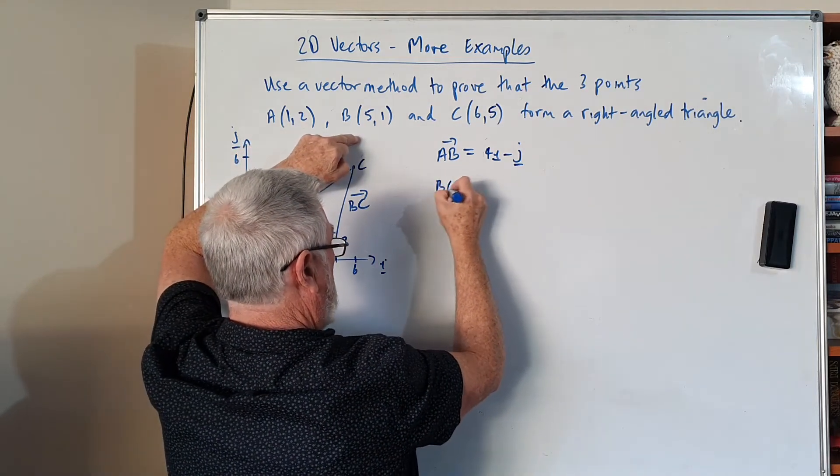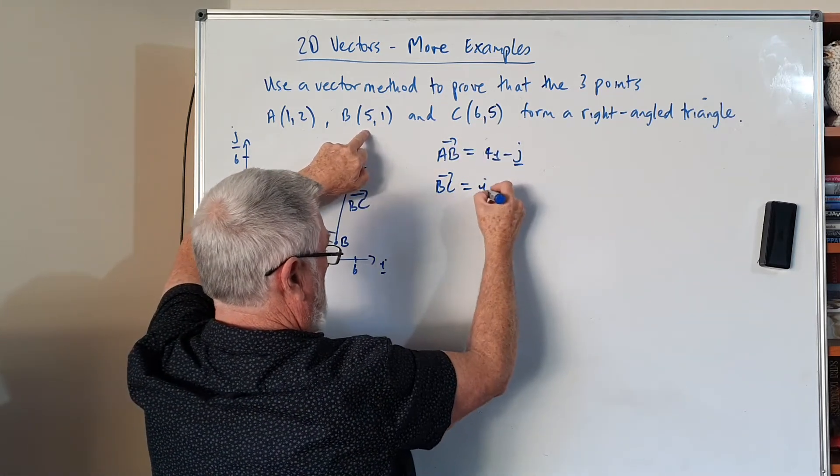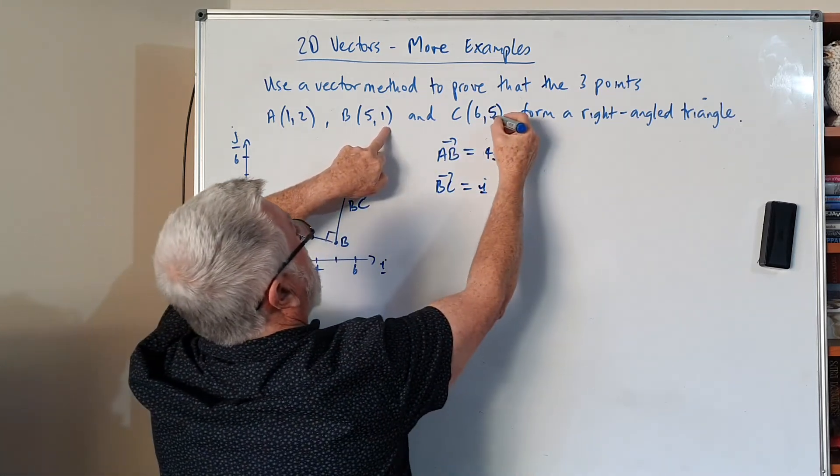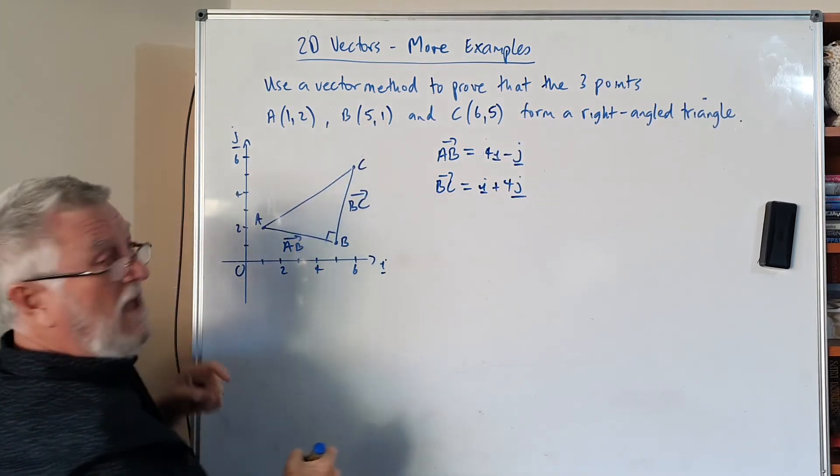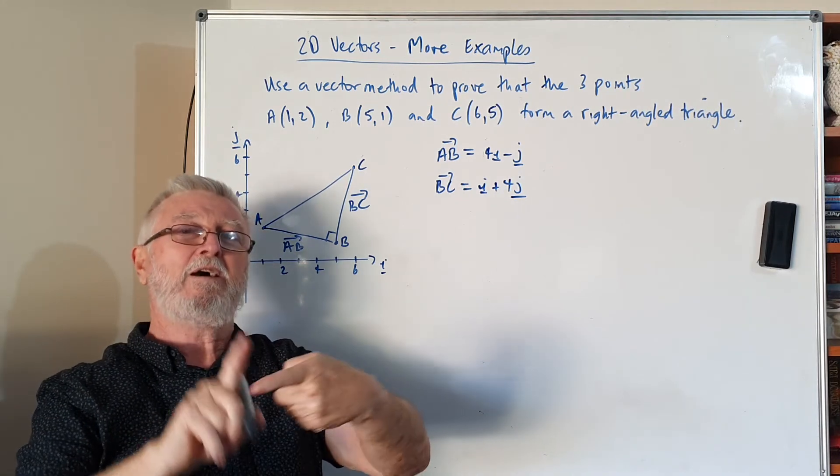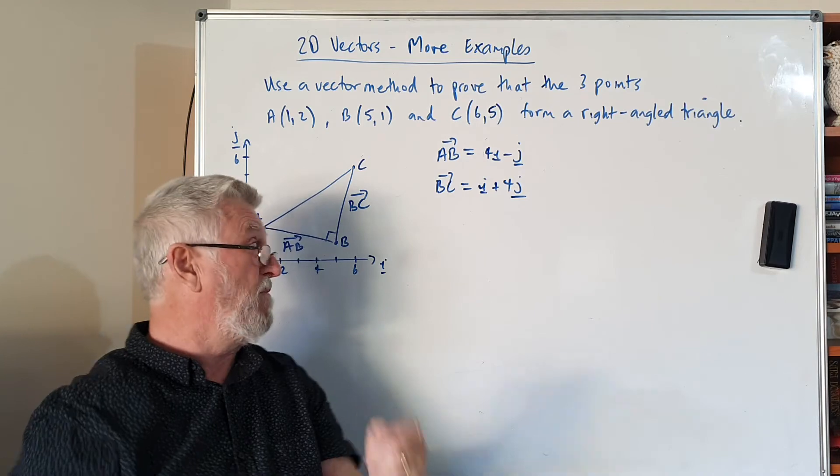Now in the light of that, we need BC. So how do I get BC? I'm going to go up one, so that's i, and I'm going to go up four, so that's four j. And how do you show that any two vectors anywhere are perpendicular to each other? We use the dot product. If the dot product is zero, that means they're perpendicular to each other.